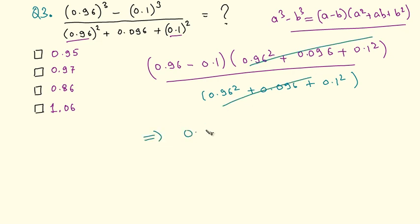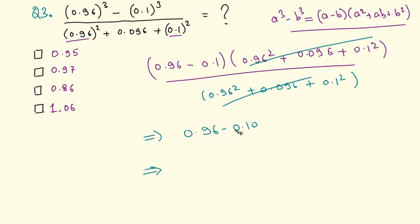After cancellation, it comes out as 0.96 minus 0.10, which equals 0.86. That is our answer — option C.